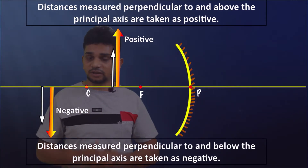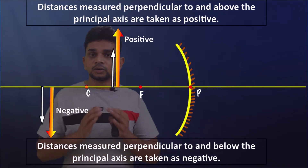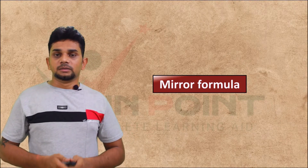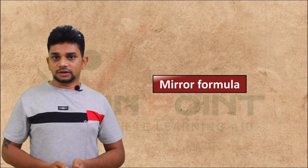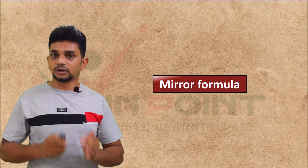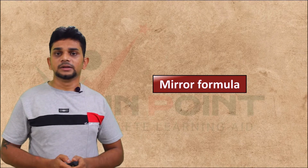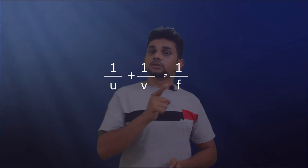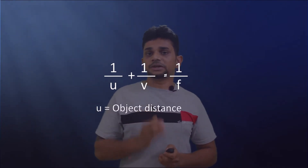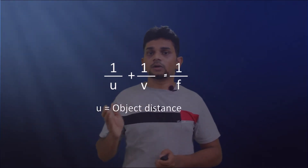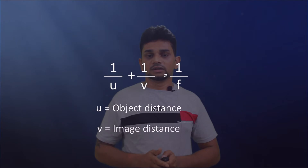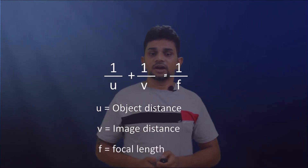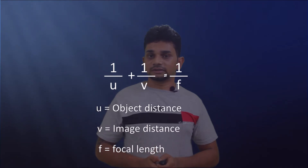These are the conventions of the new Cartesian sign convention. The next topic is the mirror formula, which is very important to solve numericals. The formula is: 1/u + 1/v = 1/f. Here, u is the object distance — the distance between the pole and the object; v is the image distance — the distance between the pole and the image; and f is the focal length — the distance between the pole and the principal focus.